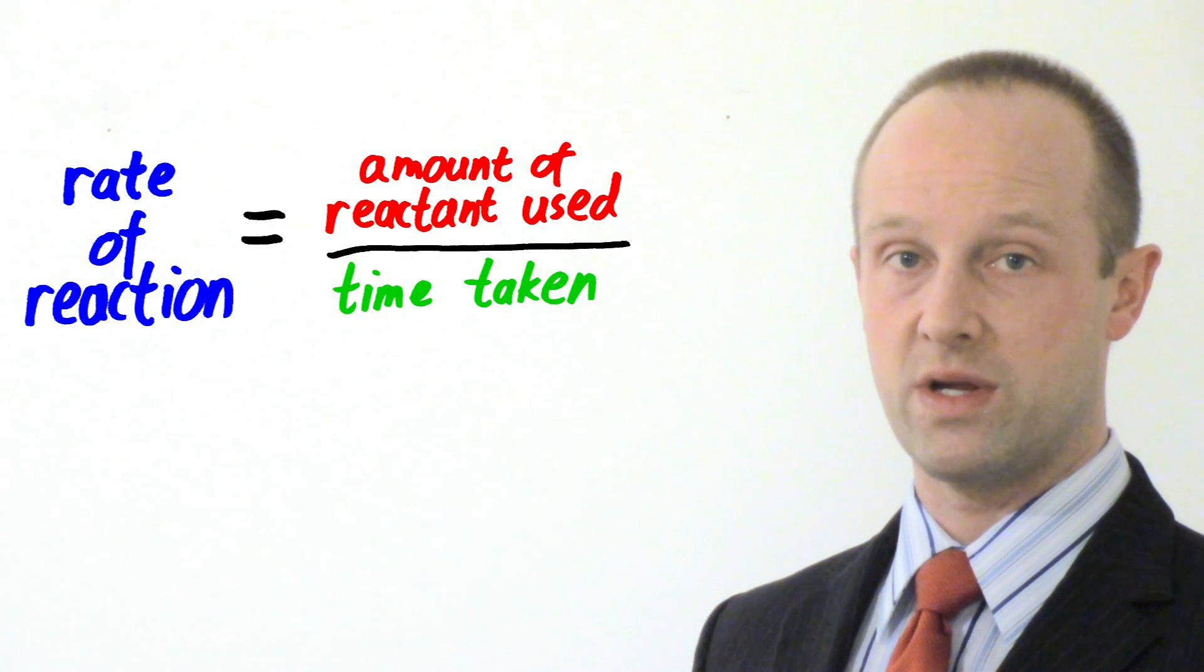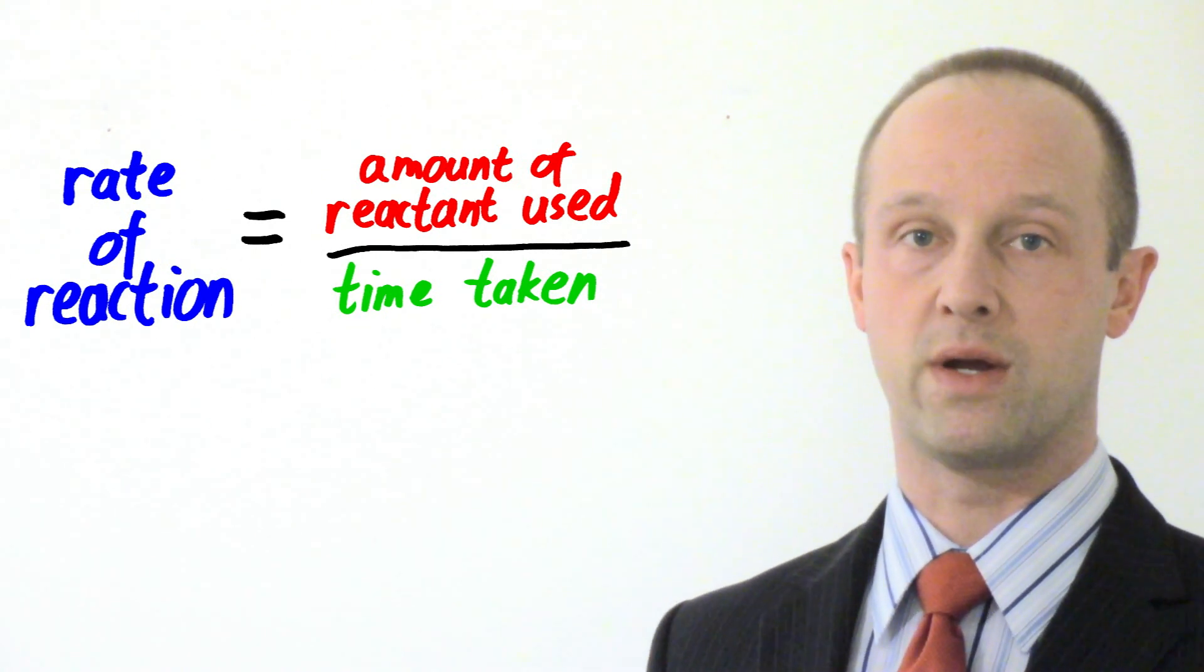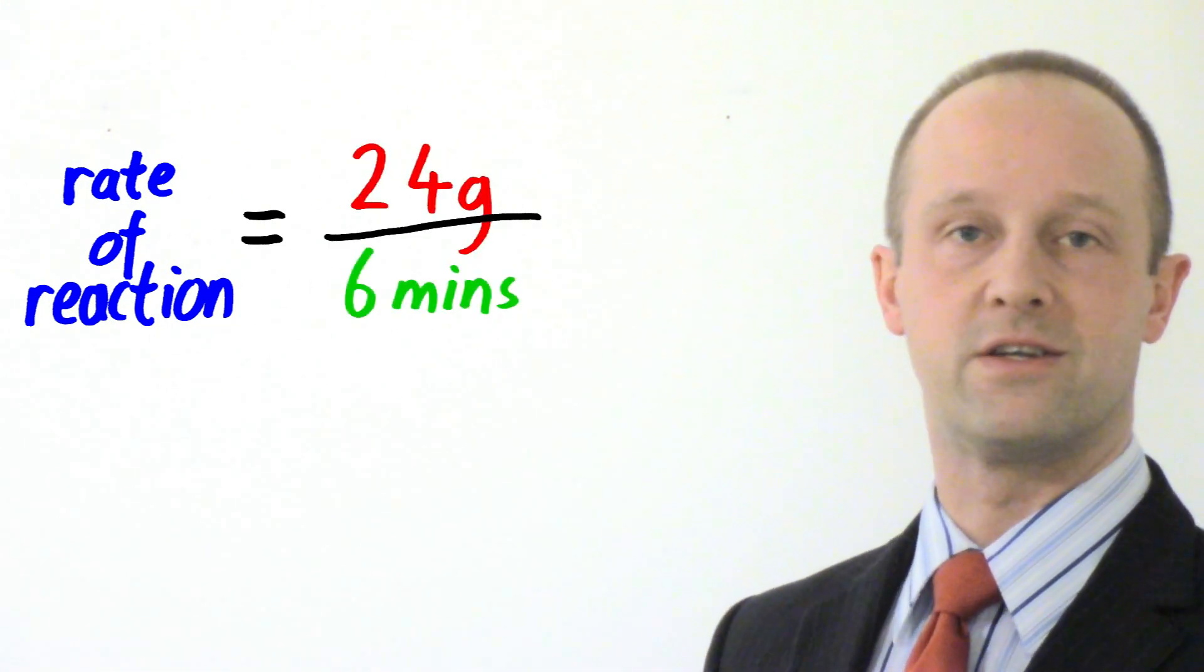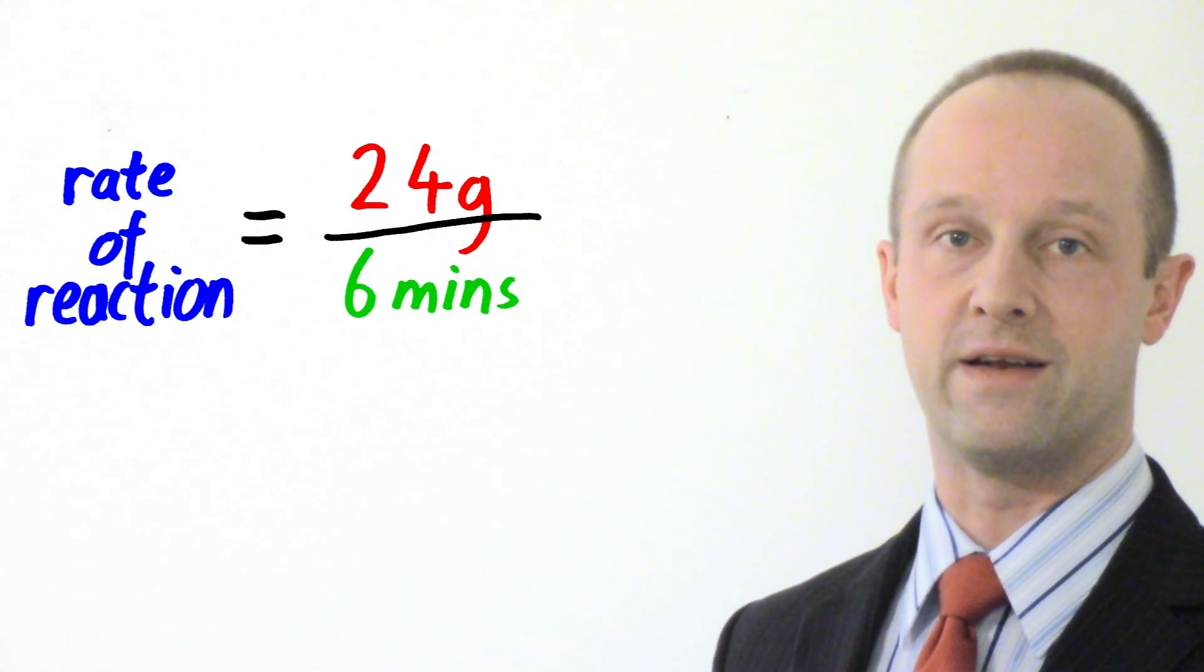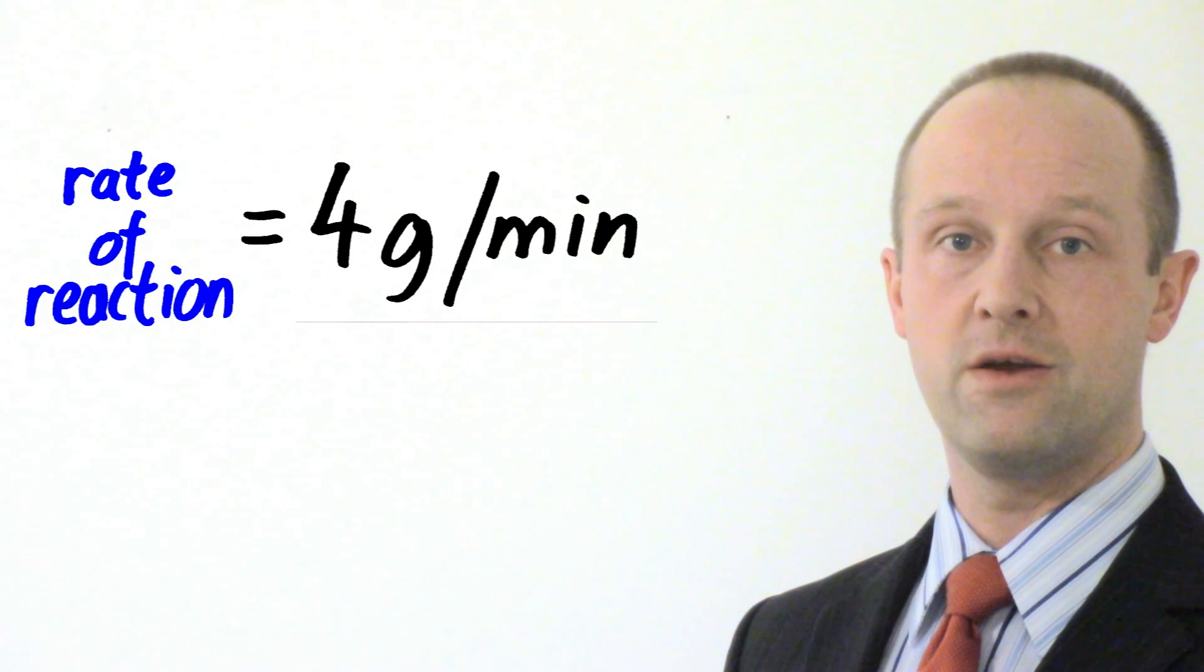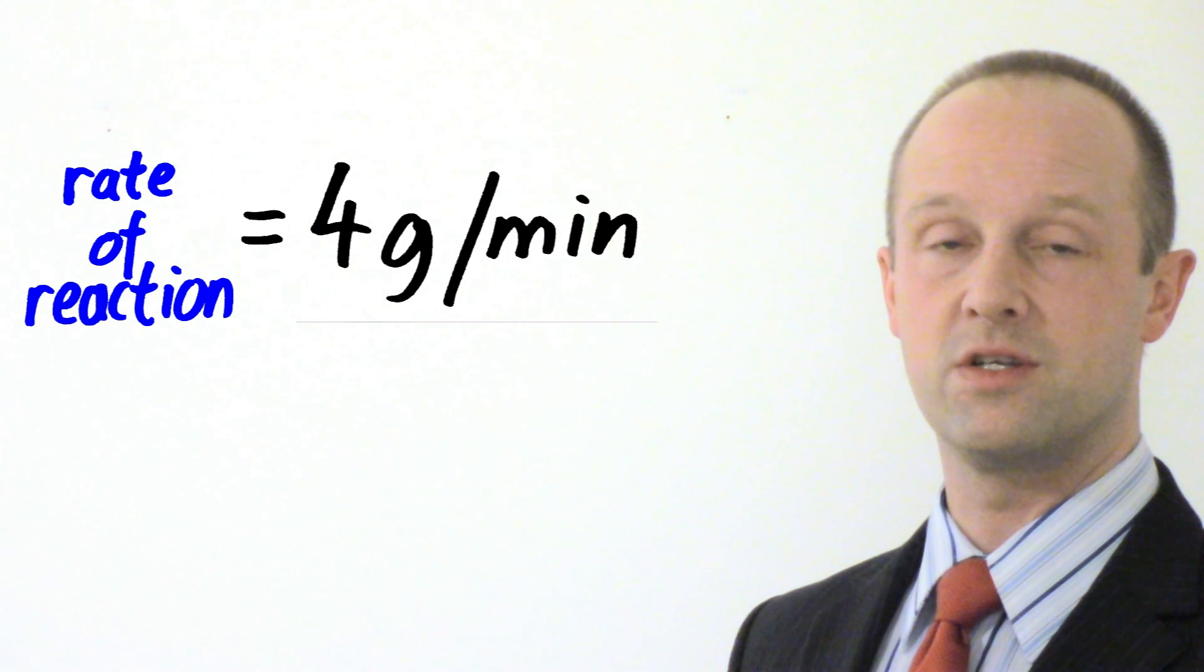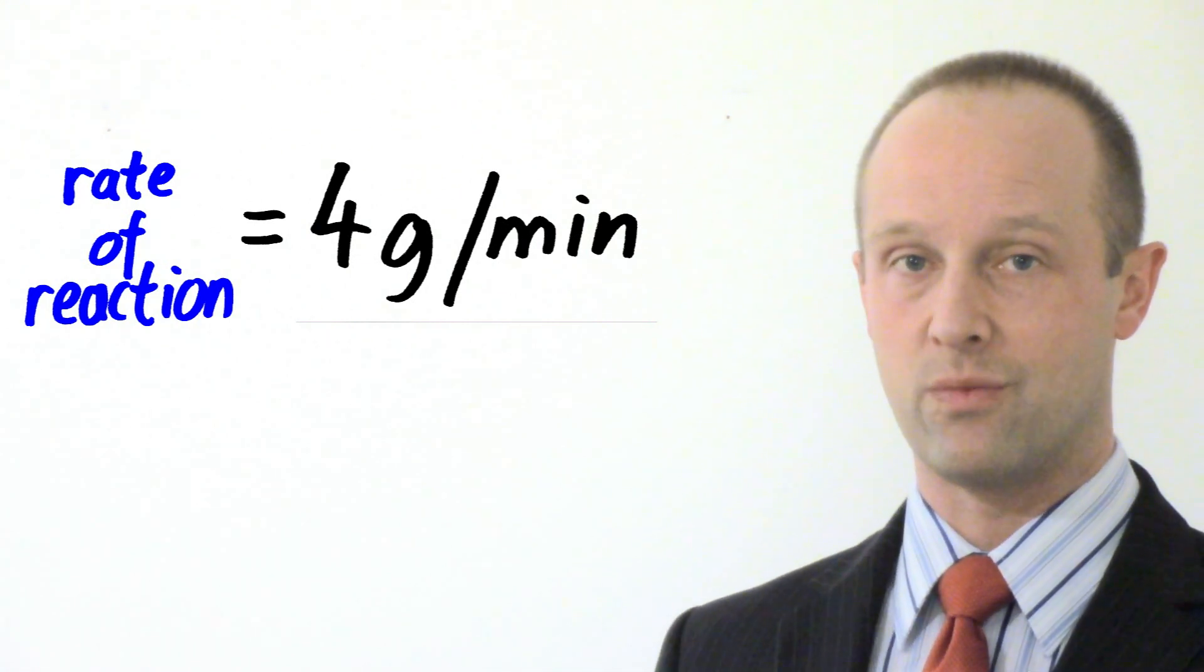Our calculation is just going to be the amount of reactant which we started with divided by the time taken. So we started with 24 grams of limestone, so we're going to do 24 on the top of this fraction, and it took six minutes, so it's a six on the bottom. So you're just doing 24 divided by six, which is a pretty easy calculation. 24 divided by six gives you four. And your units here, well you started with grams on the top, and you started with minutes on the bottom, so it's just going to be grams per minute.